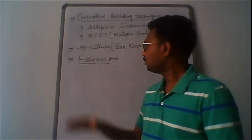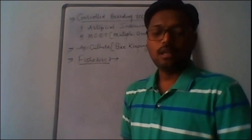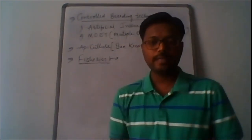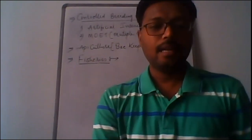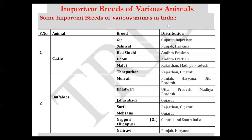Before moving to the next topic, here are important breed names for your examination. Important Indian cattle breeds include Gir from Rajasthan and Gujarat, Saival from Punjab and Haryana, Red Sindhi from Andhra Pradesh, Dioni from Andhra Pradesh, Malvi from Rajasthan and Madhya Pradesh, and Tharpakar from Rajasthan and Gujarat.